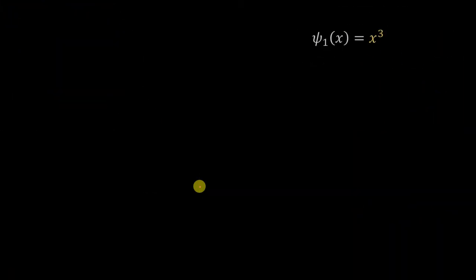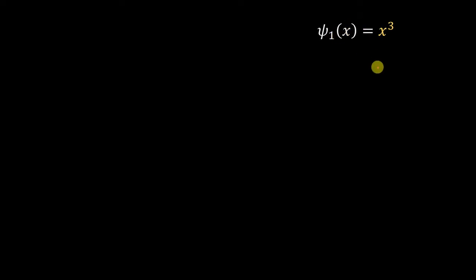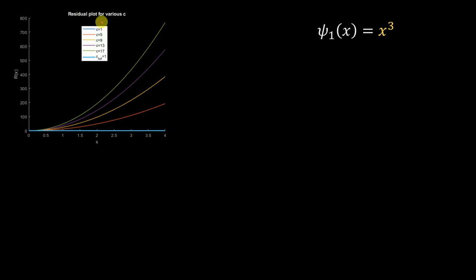Now let us use ψ₁ = x³. Note that the actual solution for this problem is nothing but x³, so what we expect is c1 = 1 and we should approach the exact solution using this basis function. Looking at the residuals for various c, note that for c = 1 — which is our solution — the residual is zero throughout the domain, meaning we have achieved the exact solution.